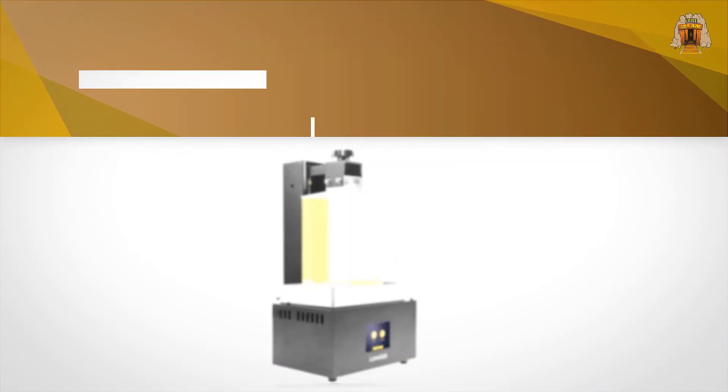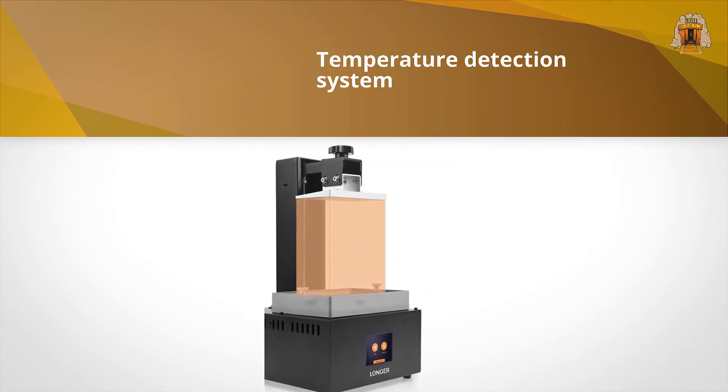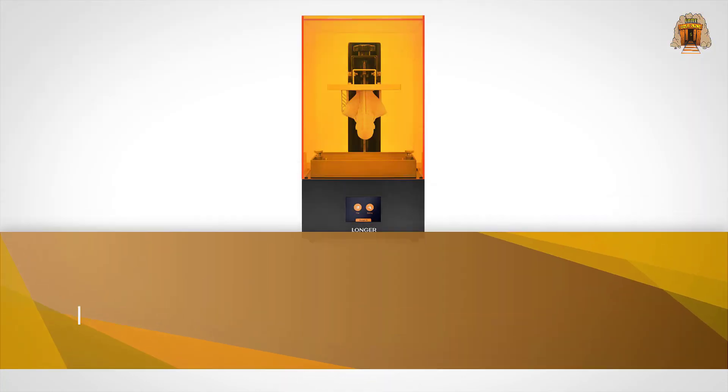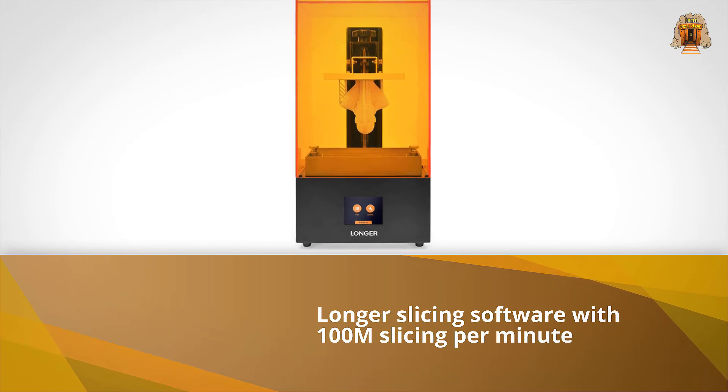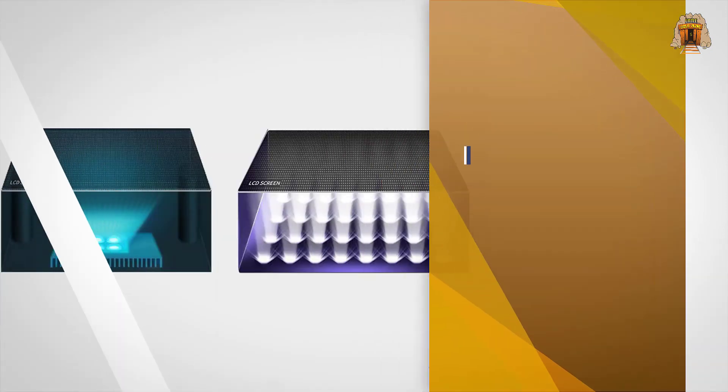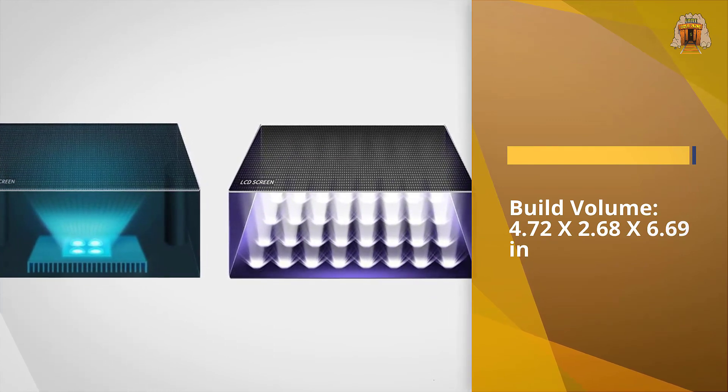It has a solid linear guide with an innovative slider to increase precision and stability. It includes matrix UV LED array illumination for better uniformity, high intensity, and shorter curing times for photo curing resin printed objects.